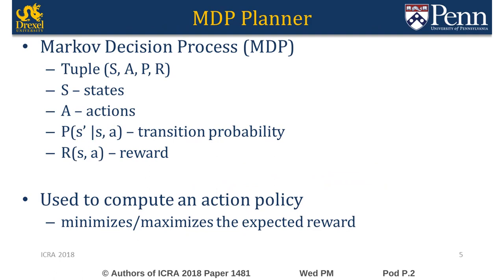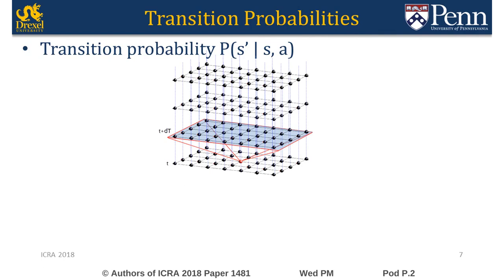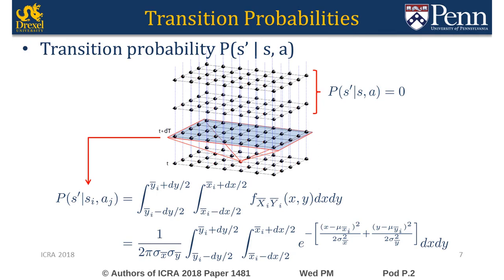Our first method is the Markov Decision Process Planner. An MDP is a tuple consisting of states, actions, transition probabilities, and a reward function. We discretize the workspace uniformly to get the states. At each state, we consider a set of predefined thrust vectors as our action set. Each action is only applied for a single time step. Therefore, the probability of transitioning to any state outside the immediately next time slice is zero.